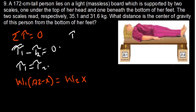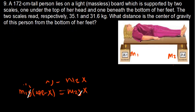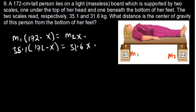Since weight = mg, we can write m1 × g × (172 − x) = m2 × g × x. The g cancels from both sides, leaving m1 × (172 − x) = m2 × x. Substituting m1 = 35.1 and m2 = 31.6, we get: 35.1 × (172 − x) = 31.6 × x.